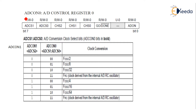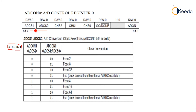SFRs are 8-bit, so ADCON0 is also 8-bit. The two MSB bits of ADCON0 work in association with ADCON1, so three bits total — two from ADCON0 and one third bit from ADCON1.